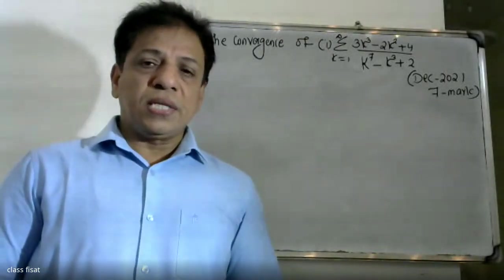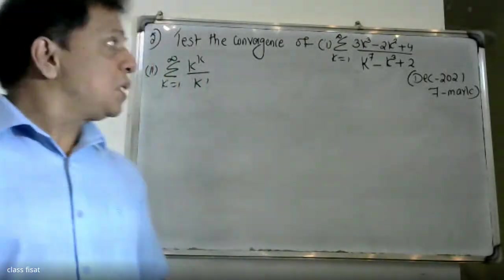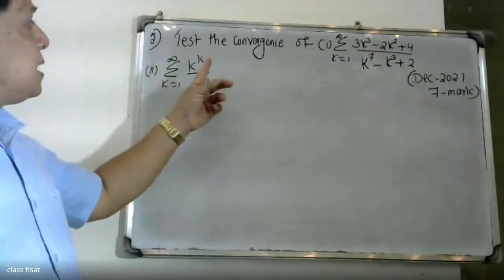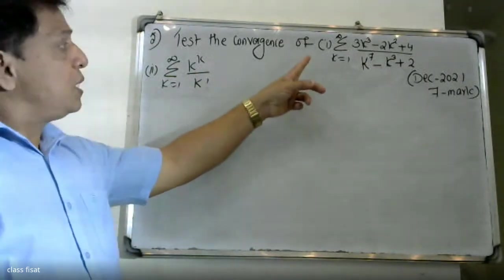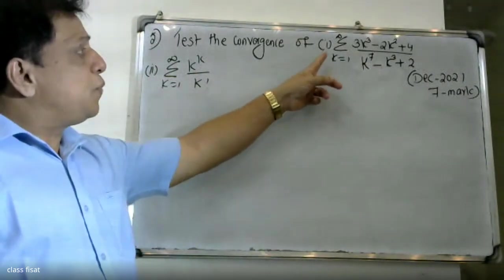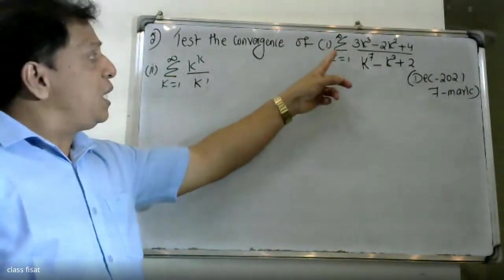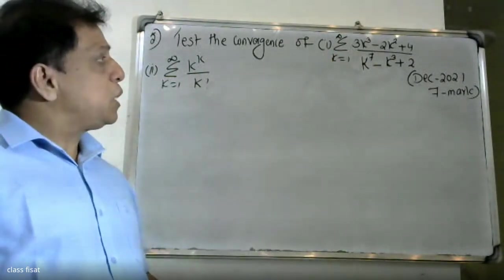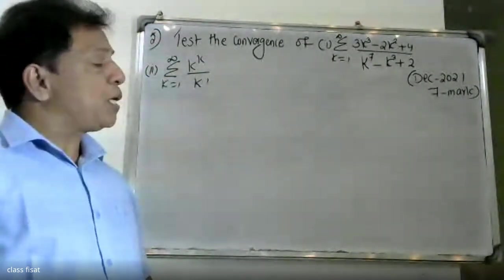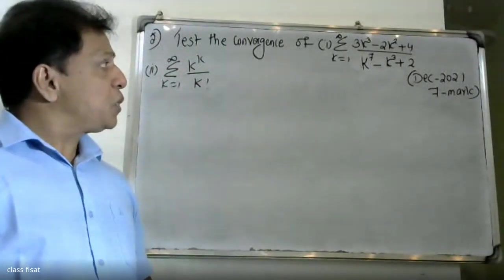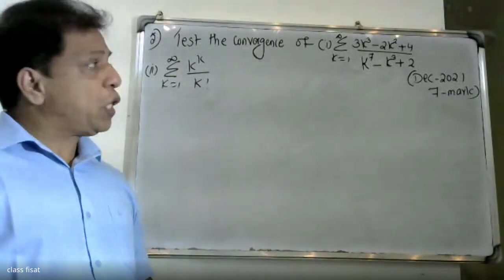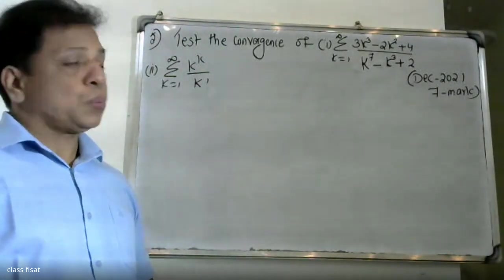Good morning students. At the university question: examine the convergence of Σ from k=1 to infinity of (3k³ - 2k² + 4) divided by (k⁷ - k³ + 2).